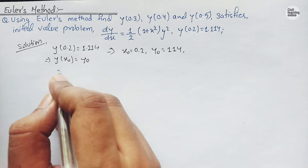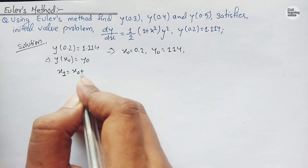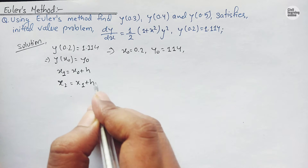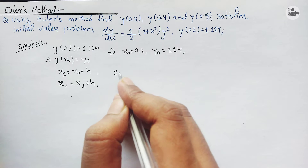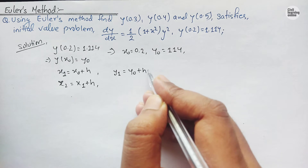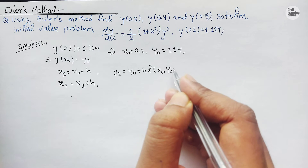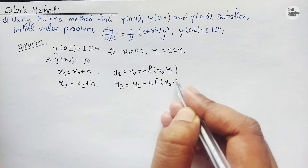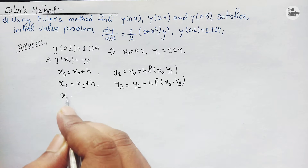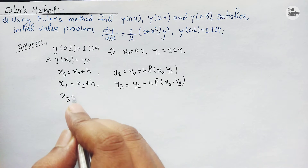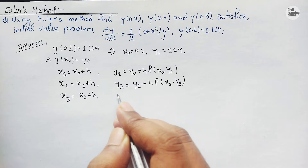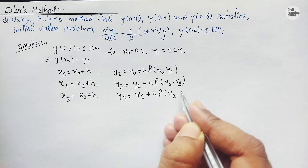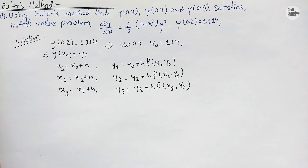The formula for Euler's method states: x₁ = x₀ + h, x₂ = x₁ + h. Similarly, y₁ = y₀ + h·f(x₀, y₀), y₂ = y₁ + h·f(x₁, y₁). Extending further, x₃ = x₂ + h and y₃ = y₂ + h·f(x₂, y₂).